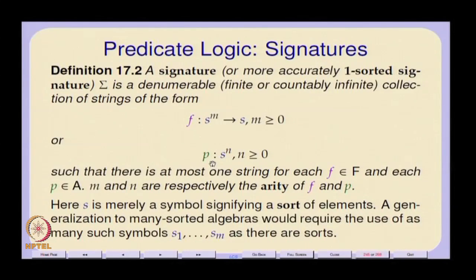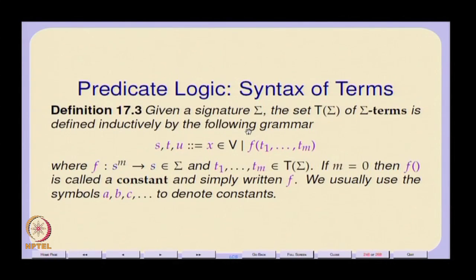It is possible to view many-sorted algebras as a single one-sorted algebra, where the various sorts are distinguished by certain new atomic predicates which tell you whether something belongs to a certain sort. So we will keep it simple and worry about a one-sorted signature. The set of terms uses the usual mathematical prefix notation depending on arity.